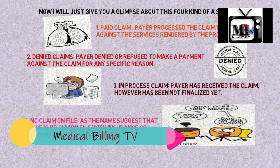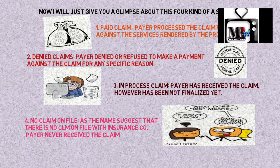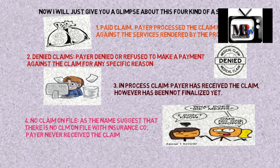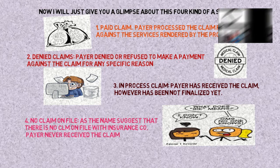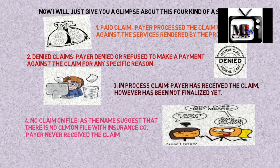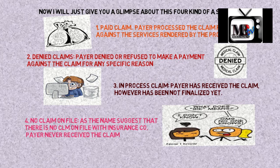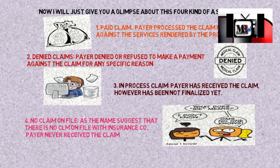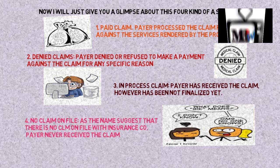The fourth status is no claim on file. As the name suggests, there is no claim on file with the insurance company — the payer never received the claim. The various reasons include sending the claim to a wrong address, a wrong payer ID, a system glitch, or an EDI issue. I have already created a video for no claim on file and in-process claim, so please go back and re-verify those terms if you have any doubts.